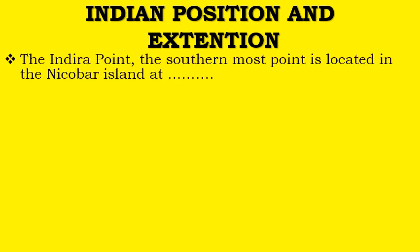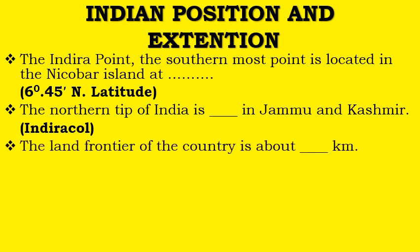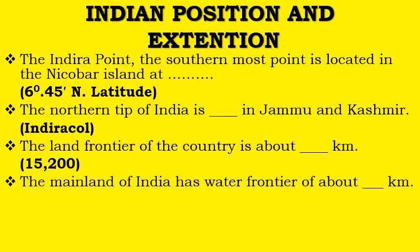The Indira Point — the southernmost point — is located in the Nicobar Island at 6 degree 4 minutes 5 seconds North latitude. The northern tip of India is Indira Col in Jammu & Kashmir. The land frontier of the country is about 15,200 km. The mainland of India has a water frontier of about 6,100 km.